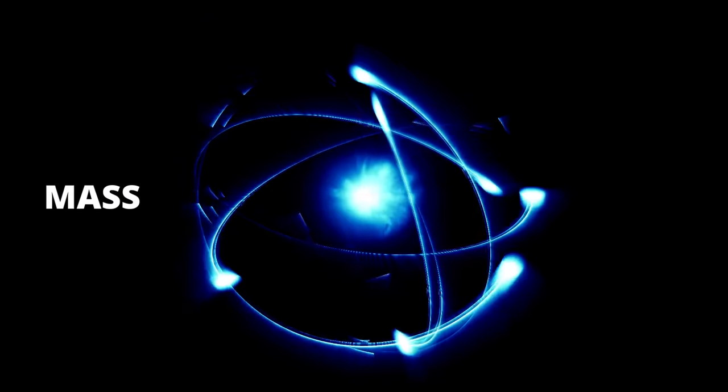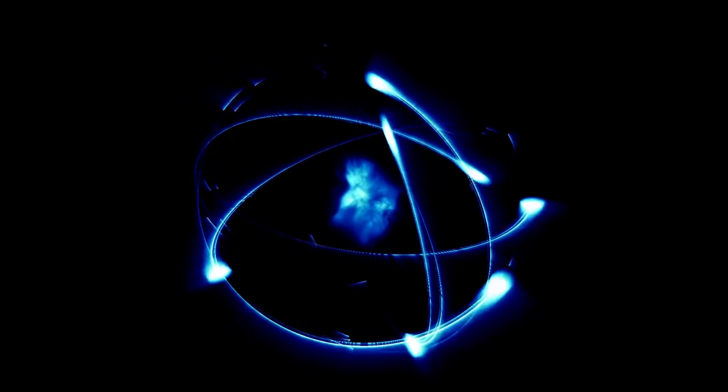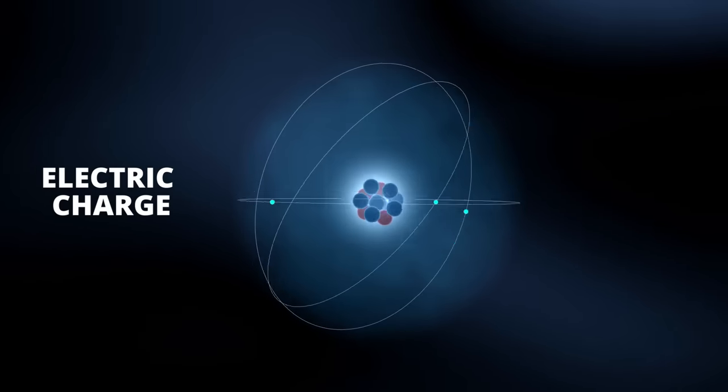An electron has measurable properties such as its mass, electric charge, and magnetic dipole moment.